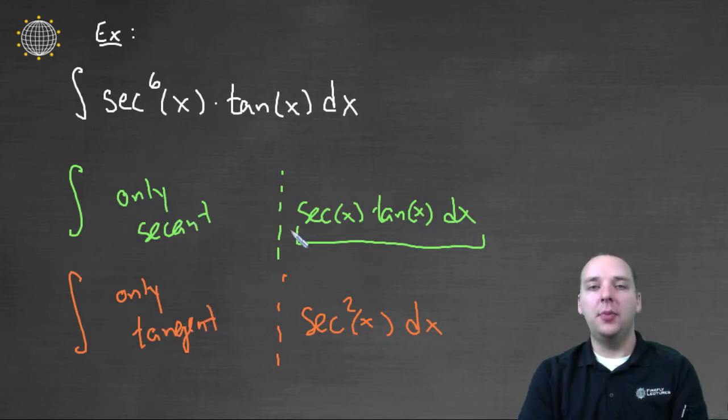And then what we want for the remaining part of the integrand is either secant tangent, which would be the derivative for secant, or secant squared, which is the derivative for tangent.